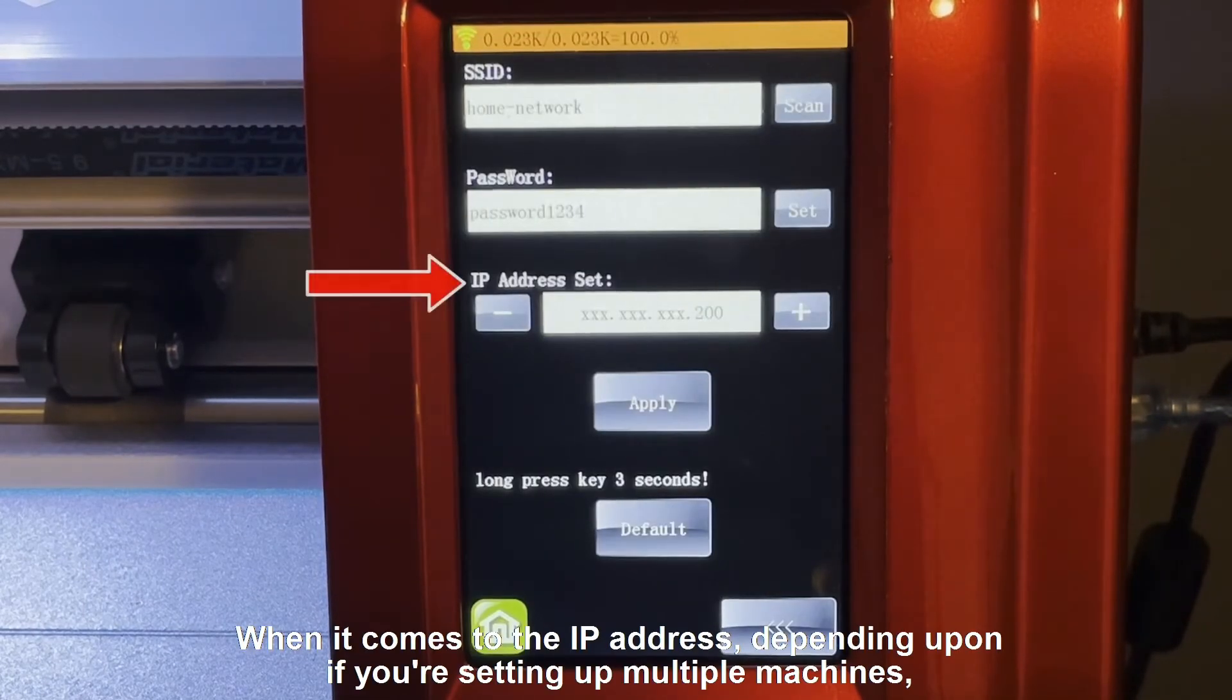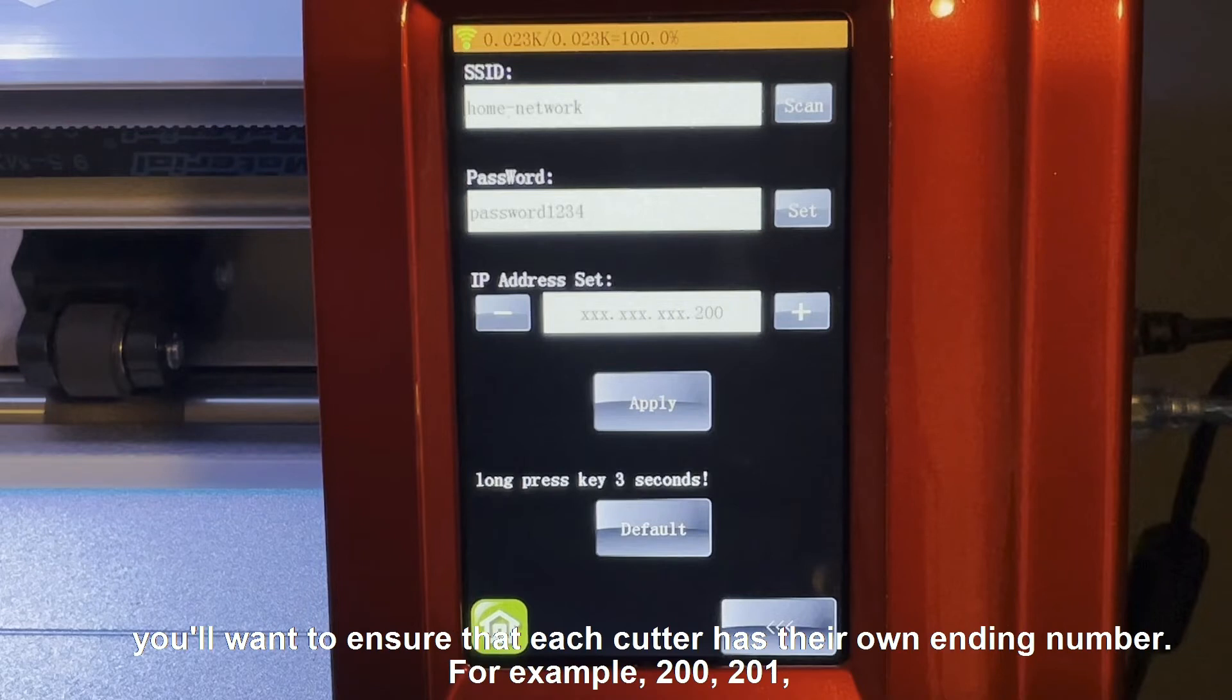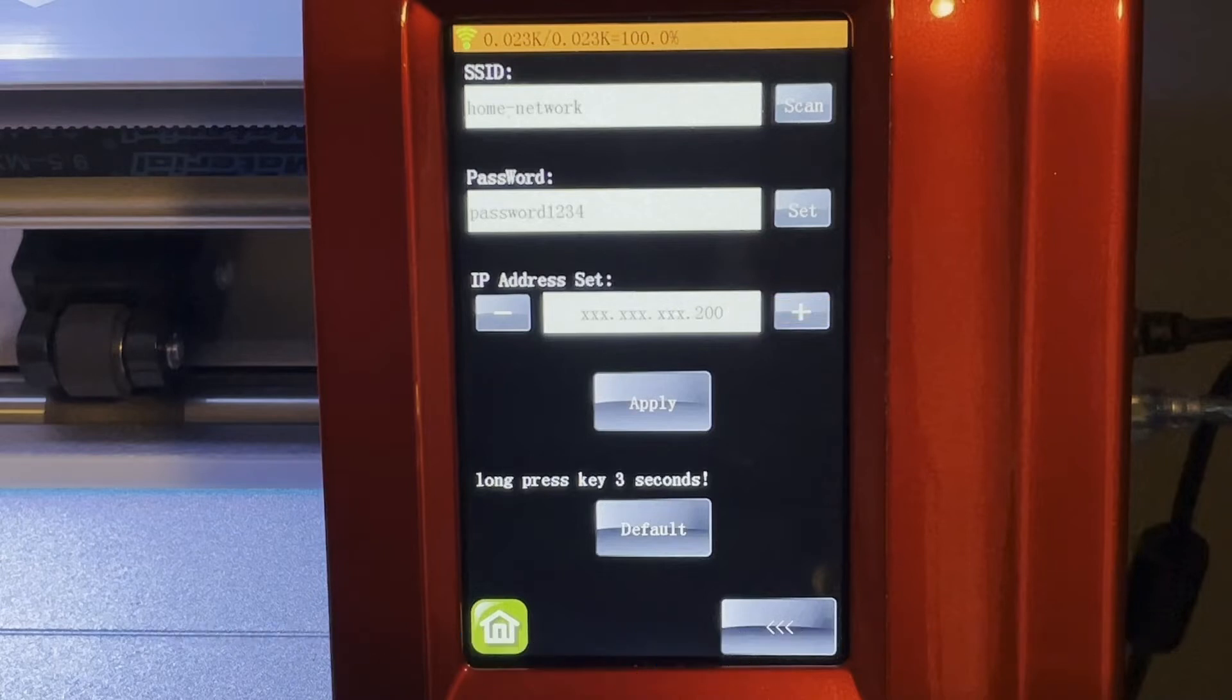When it comes to the IP address, depending upon if you're setting up multiple machines, you'll want to ensure that each cutter has their own ending number. For example, 200, 201, and so on.